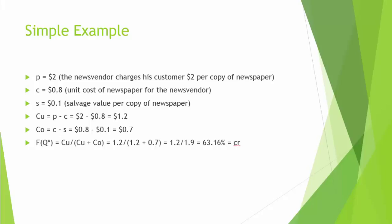Now consider a simple example. Let's say the news vendor charges his customers $2 per copy of the newspaper, and he purchases the newspaper from the supplier at $0.80 per copy. The news vendor can recycle unsold copies and get $0.10 as salvage value. Therefore, CU equals P minus C, which is $1.20. CO equals C minus S, which is $0.70. The critical ratio will be $1.20 over $1.90, which turns out to be 63.16%. That is to say, in order to maximize expected profit, the news vendor should order a quantity that meets demand 63.16% of the time.